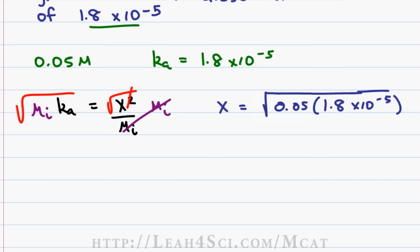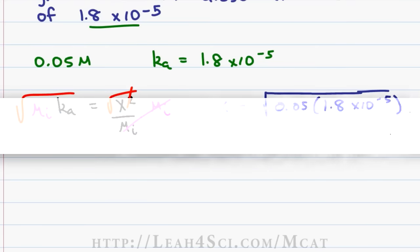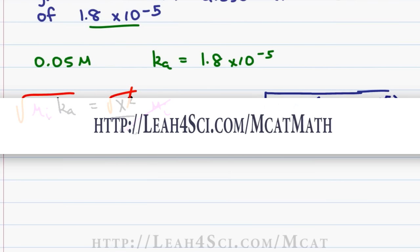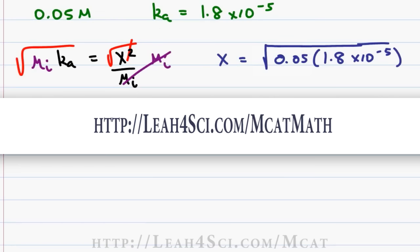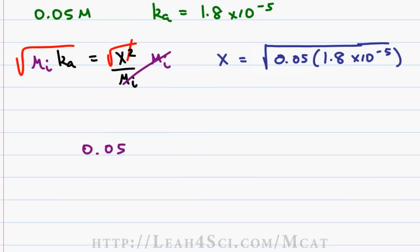We have a square root and we have scientific notation. So how do you proceed? I'm assuming that you've already watched my video on how to multiply scientific notation. If you haven't, you can find it on my website at leah4sci.com slash MCAT math. Starting with multiplication, we have 0.05 times 1.8 times 10 to the minus 5.